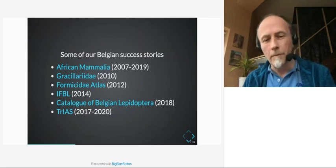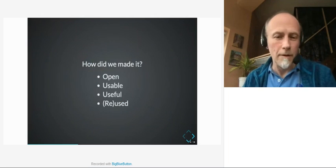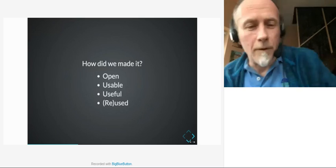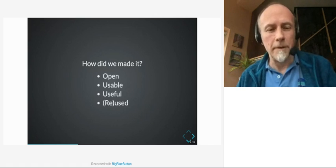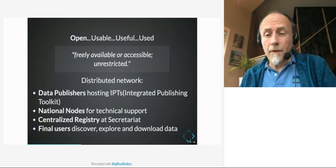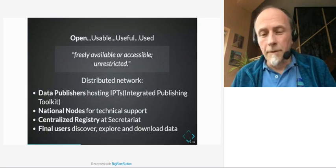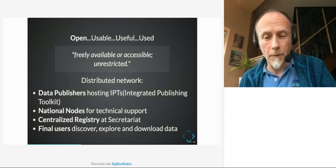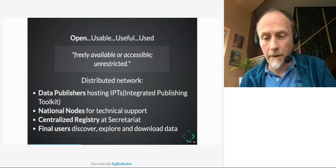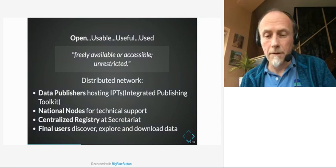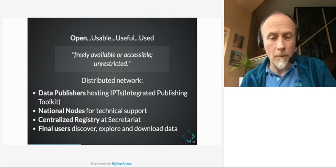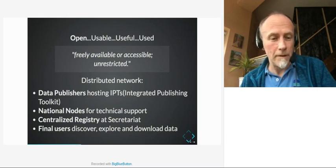How did we make it open, usable, useful, and reused? By open I mean freely available and accessible without any restriction. Putting a zip file somewhere on the internet is not enough to declare your data open. With GBIF we rely on a rapidly growing distributed network of data publishers, guided by national nodes such as the Belgian Biodiversity Platform, supported by an efficient secretariat based in Copenhagen. This large community is important because we exchange best practices, and this is how we make things more and more open.